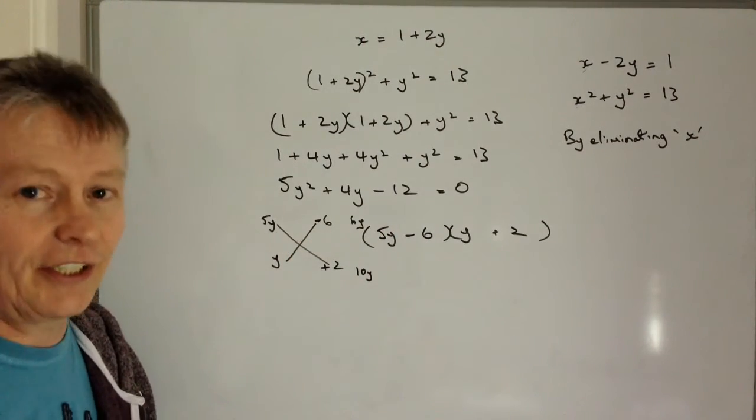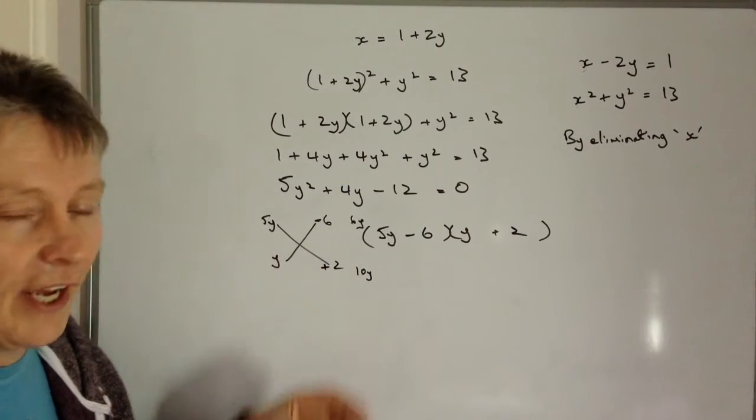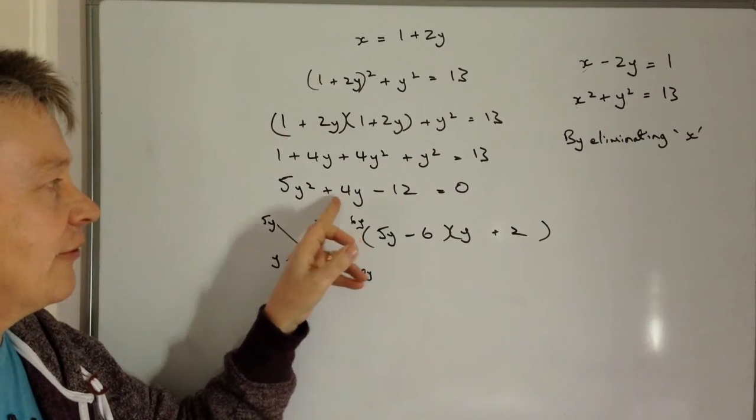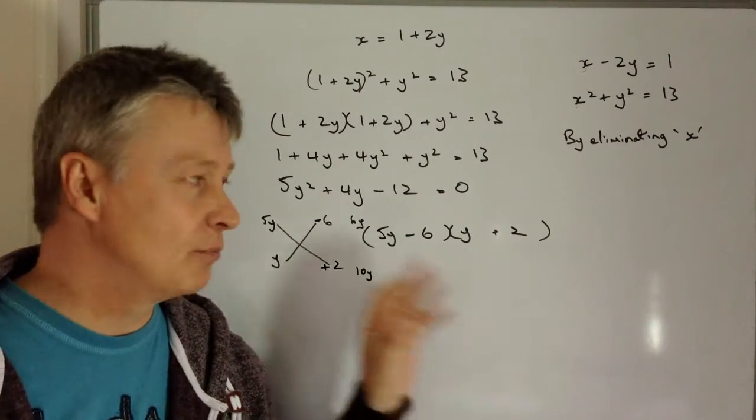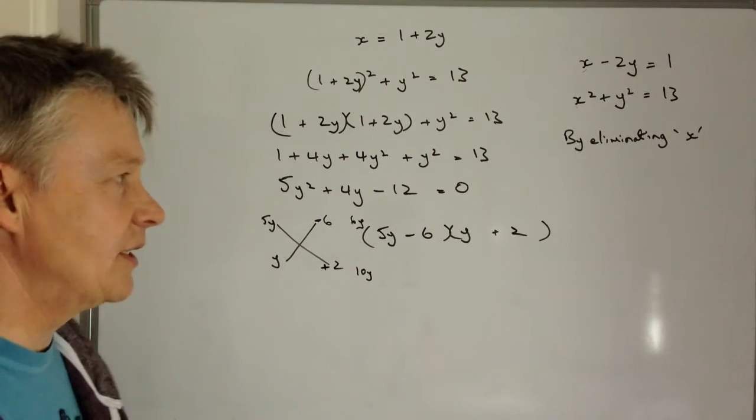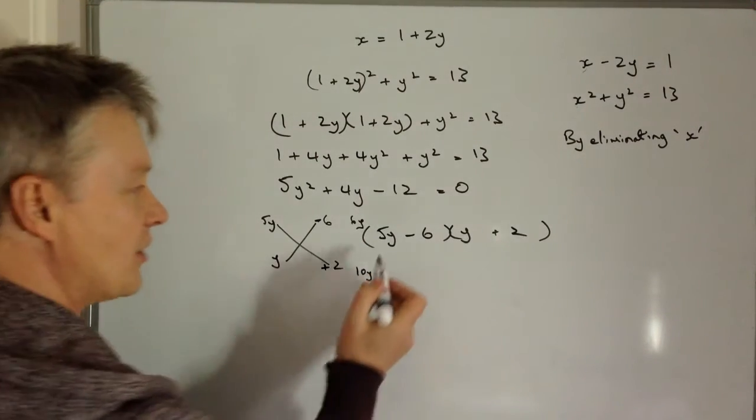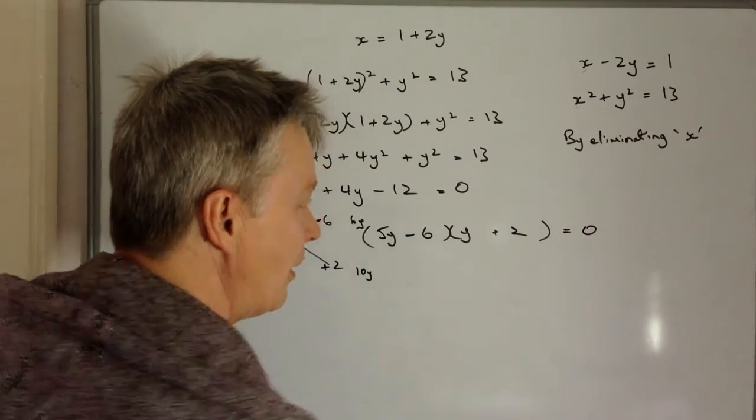The reason I kind of like this method is because if I put 3 and 4 in there, I would have very quickly seen that I couldn't multiply that out to make 4Y. So I've tended to prefer this method, but it's mainly down to just having a bit of familiarity with it. So I've got 5Y minus 6 multiplied by Y plus 2 and that equals zero.